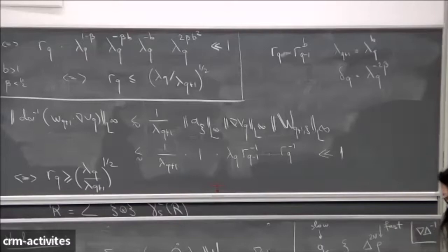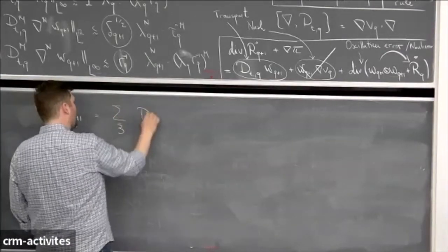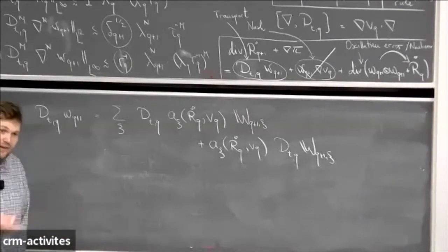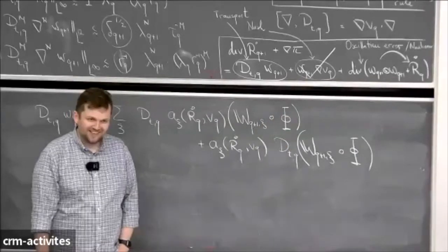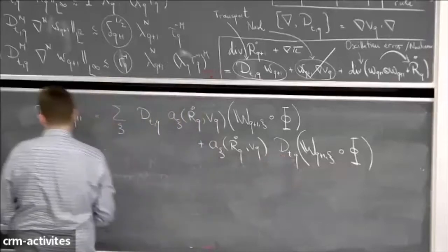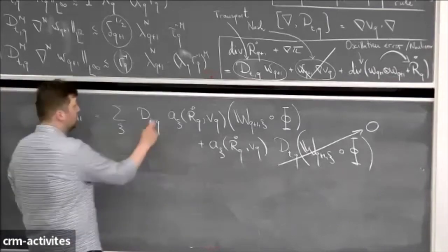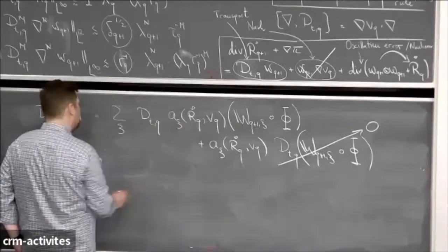Now let's talk about the transport error. By the product rule, the material derivative either hits the amplitude functions or the building block. The building block is fast, so if the material derivative hits it you're in trouble — you want that to be zero. These building blocks don't even depend on time at this point. The ansatz is not purely Eulerian but Lagrangian: the building blocks are composed with a flow map, which is the inverse of the Lagrangian map of this vector field, making that term zero.